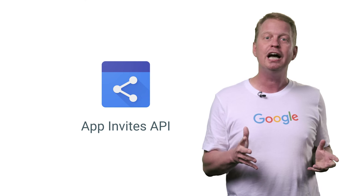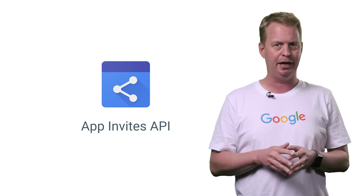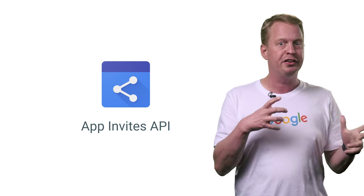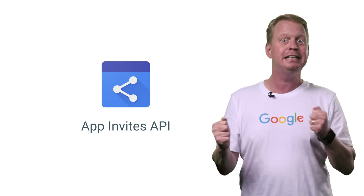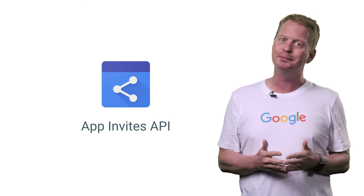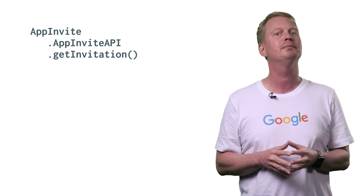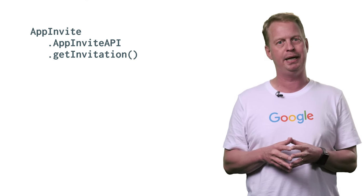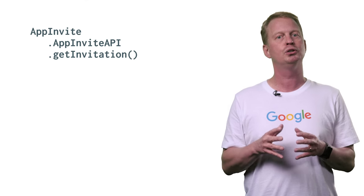We also have announcements for the App Invites API — the one that allows your users to invite and engage their friends with your app. In this release, we've added the Get Invitation method. This method will set up a result callback that you can use to launch your deep link activity. This dramatically simplifies your code, so check out the samples in the description.